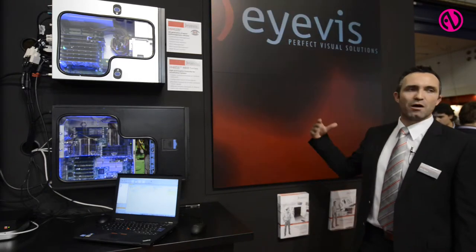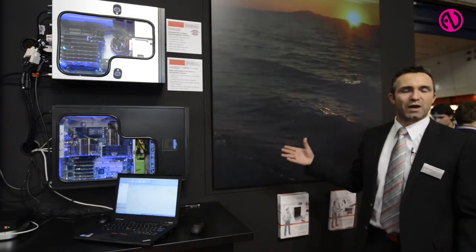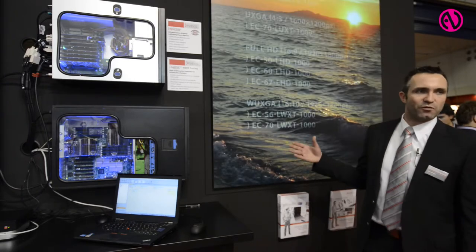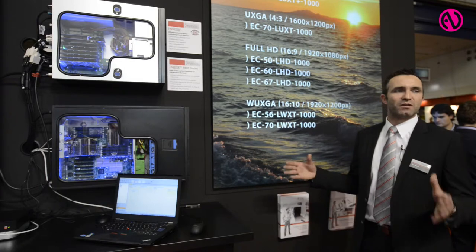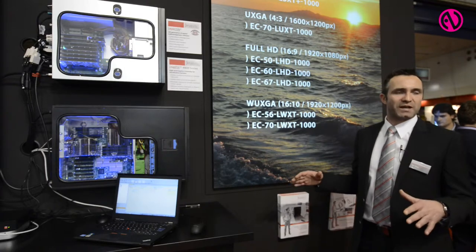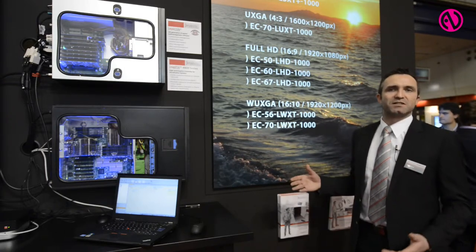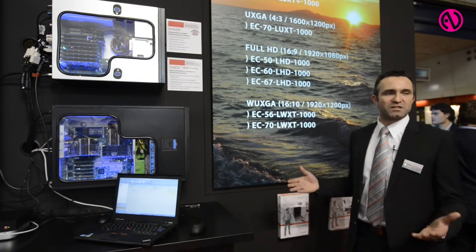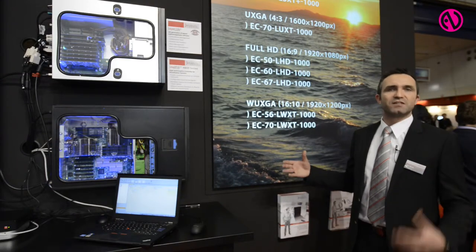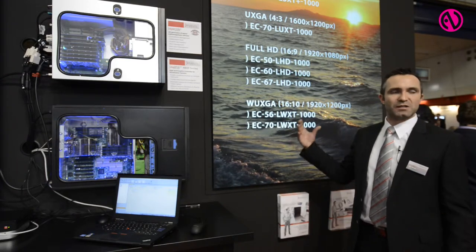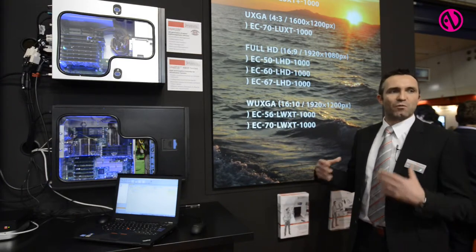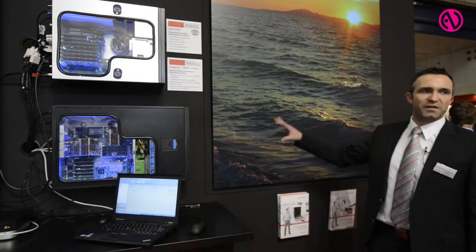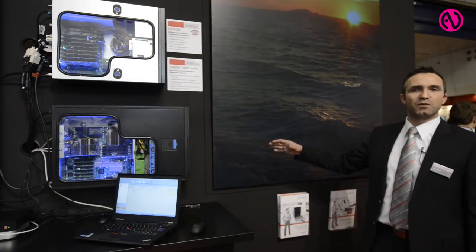It now has a higher brightness than before, which is not so important for control rooms because there you usually have low ambient light, but in other applications such as TV studios or presentation areas you have more light, so you need a display system with higher brightness. Therefore we now have the EC 1000 series available.